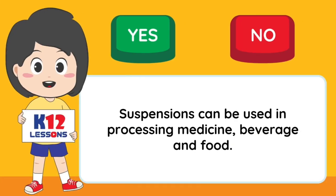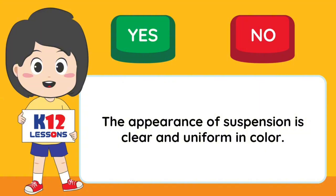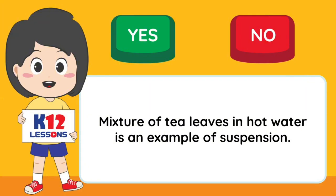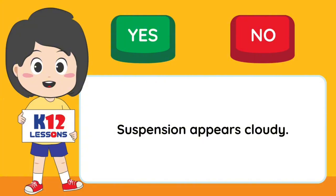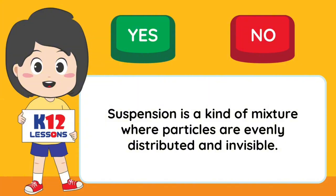Identify whether the answer is yes or no. Suspensions can be used in processing medicine, beverages, and food. The appearance of suspension is clear and uniform in color. Mixture of tea leaves in hot water is an example of suspension. Suspension appears cloudy. Suspension is a kind of mixture where particles are evenly distributed and invisible.